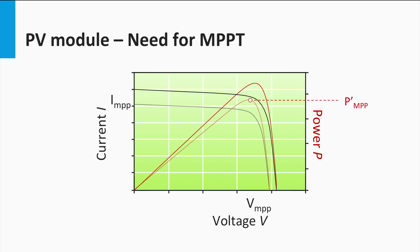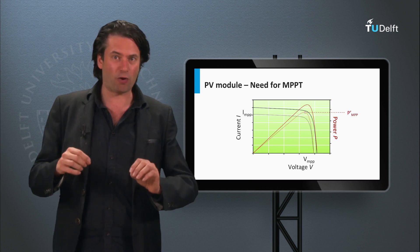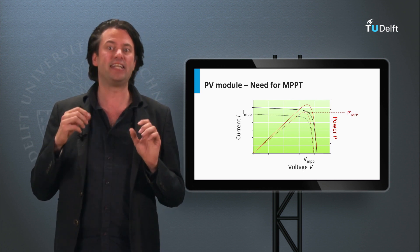This would mean that the old MPP is no longer valid under these conditions. Thus, to be continuously at the maximum power point at all times, we would need to track any such changes in the IV curve and find out the new MPP. This process is called maximum power point tracking, or MPPT, and the devices that perform this process are called MPP trackers.